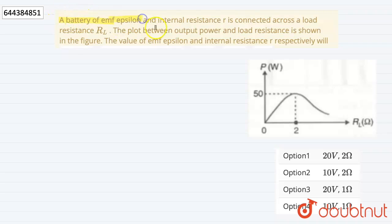A battery of emf epsilon and internal resistance r is connected across a load resistance RL. The plot between output power and load resistance is shown in this figure. We have to find the value of emf epsilon and the internal resistance r respectively.